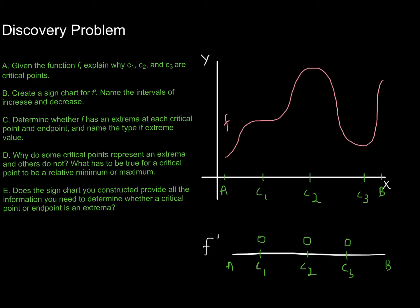The key here is going to be this sign chart that you are creating. Notice that all of those c values are critical points because at those points the derivative is 0. We can tell by looking at the graph of f, because at these particular points we should see that the slope is 0. So constructing my sign chart, I have all the critical points, and I've labeled that at those particular critical values the derivative is 0. Now I'm going to determine the sign in between, which will help me determine the intervals of increase and decrease.